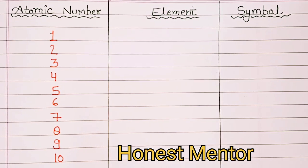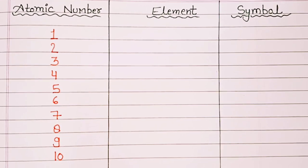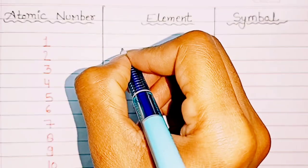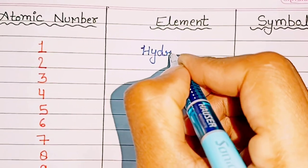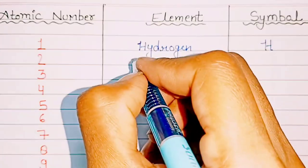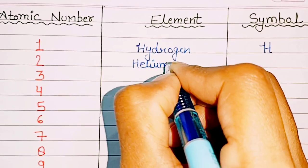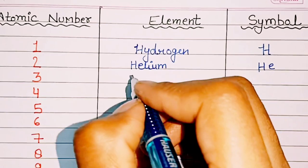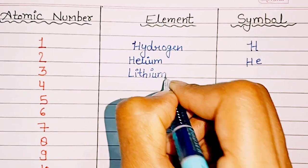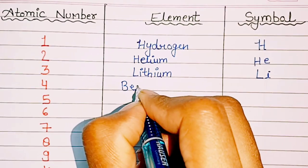Hello everyone, welcome to my channel. In today's video we are going to see atomic number, element and symbols. Let's start. 1: Hydrogen, symbol H. 2: Helium, symbol He. 3: Lithium, symbol Li.